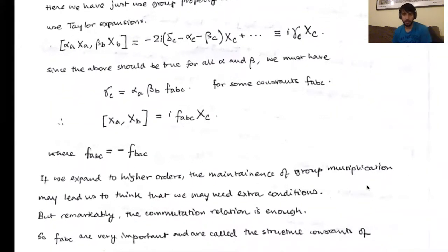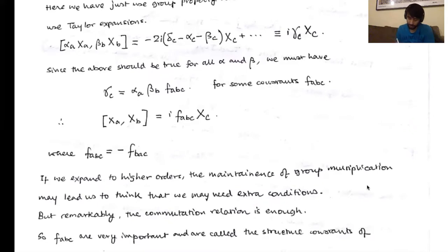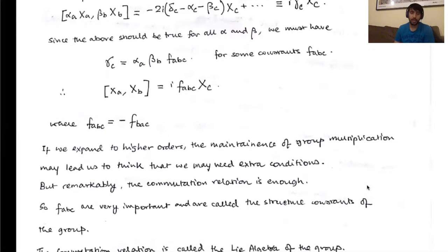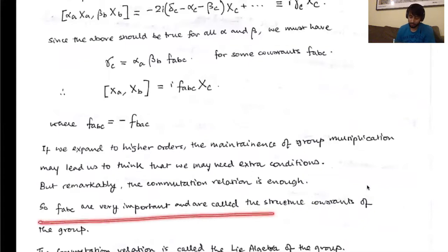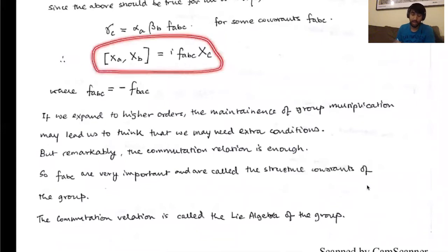The remarkable part is that you might think that to maintain group multiplication at higher and higher orders of expansion, it might require more and more things — that we might need extra conditions. But remarkably, this is not the case. Just by writing down this commutation relation, you can fix it to all orders. I urge you to try this at the next order and see what exactly is happening. So what I want to stress is that these F_{ABC}'s are very important, and these are called the structure constants of the group. And what we have is called the Lie algebra of the group.